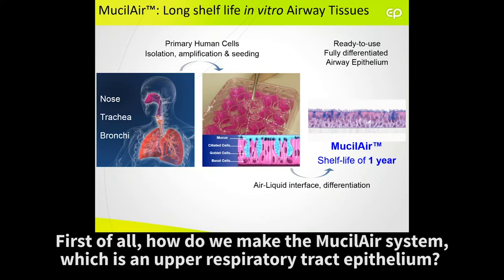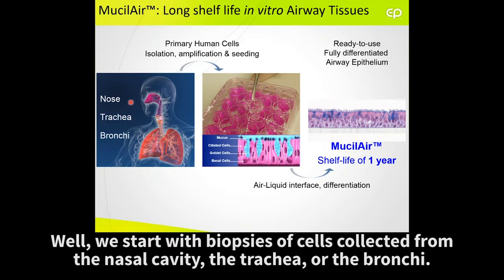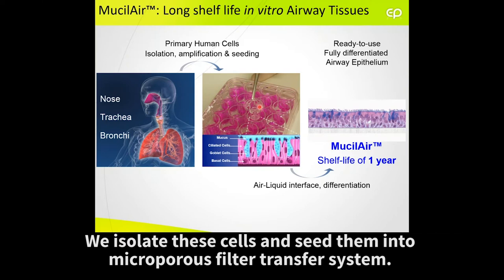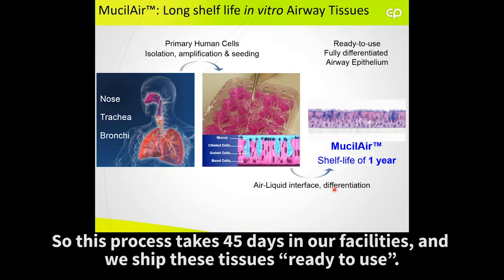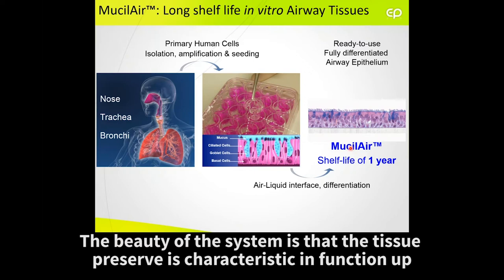First of all, how do we make the MucilAir system, which is an upper respiratory tract epithelium? We start with biopsies of cells collected from the nasal cavity, the trachea or the bronchi. We isolate these cells and seed them into a microporous filter transfer system. Then we switch the cells to the air-liquid interface, and they progressively differentiate into an epithelium. This process takes 45 days in our facilities, and we ship these tissues ready to use.